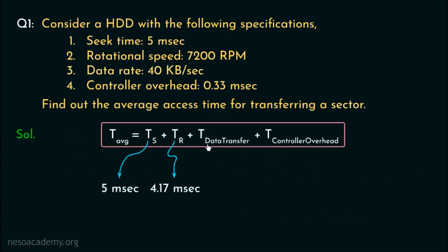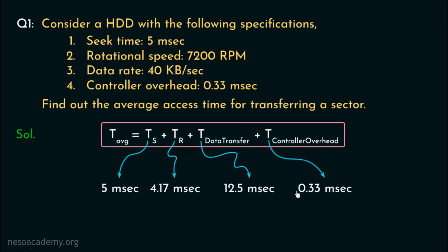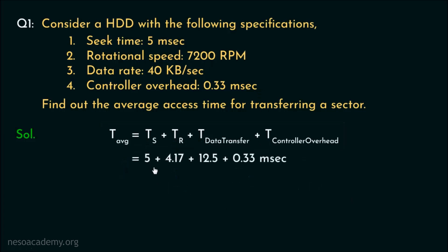The T data transfer, the time taken for data transfer, is 12.5 milliseconds. The controller overhead is already given as 0.33 milliseconds. Now let's add everything up: 5 + 4.17 = 9.17, plus 12.5 = 21.67, and adding 0.33 gives us 22 milliseconds. So for this hard disk drive, the average access time for transferring a sector is 22 milliseconds.